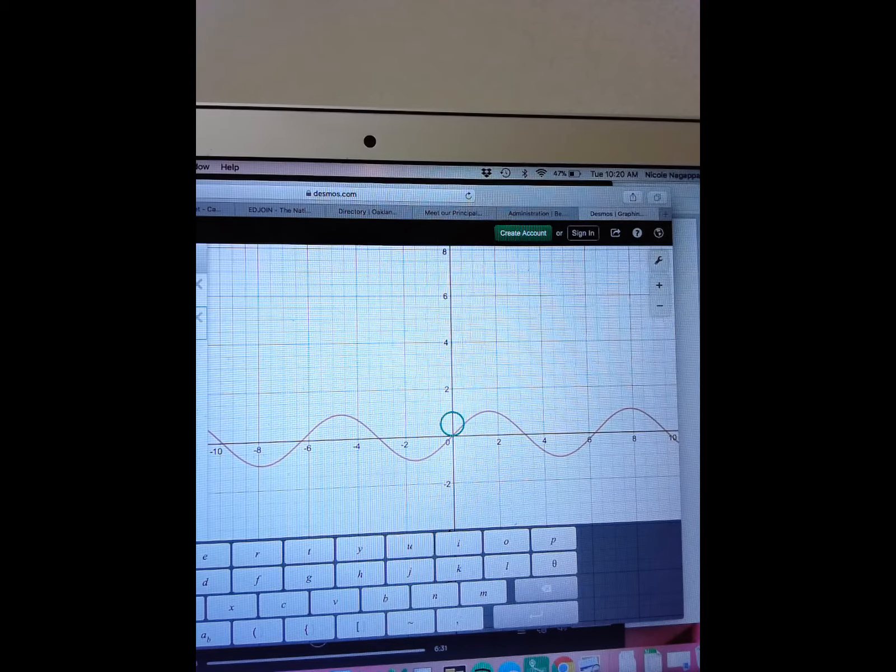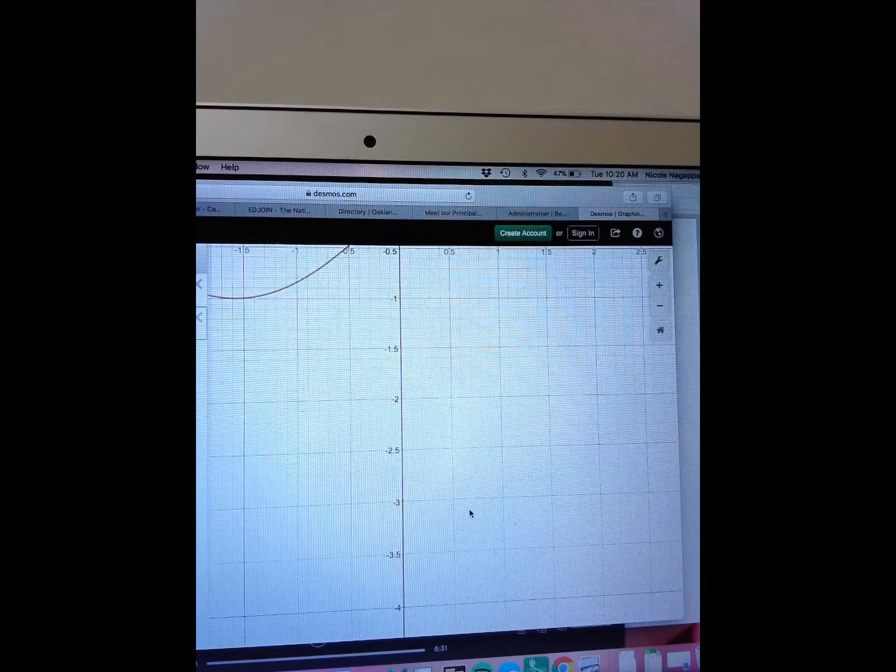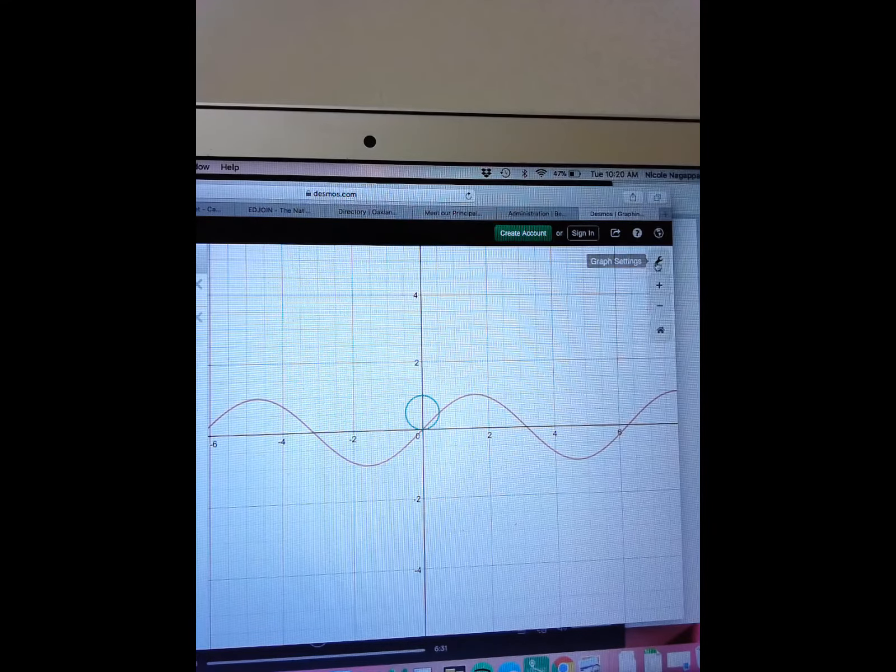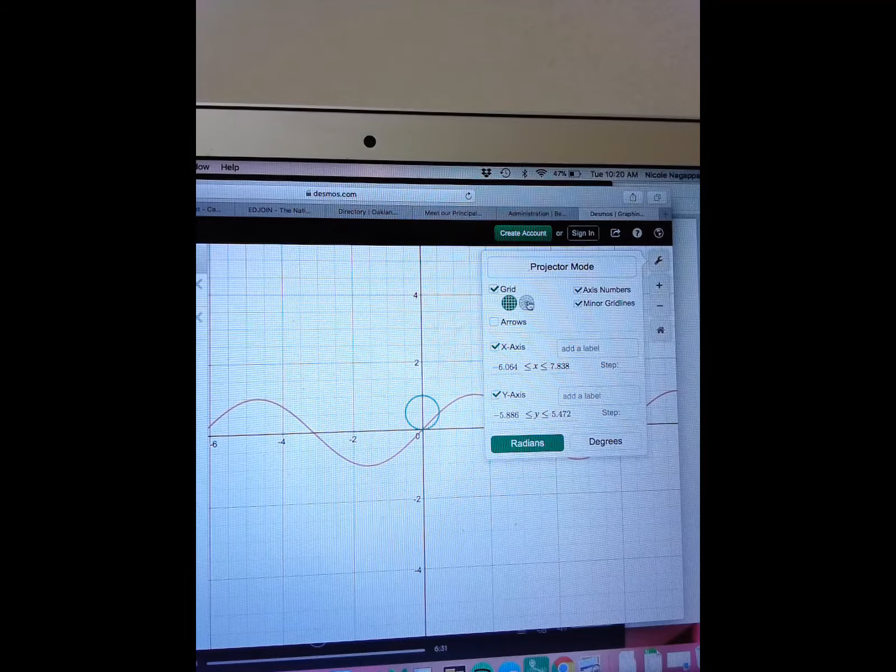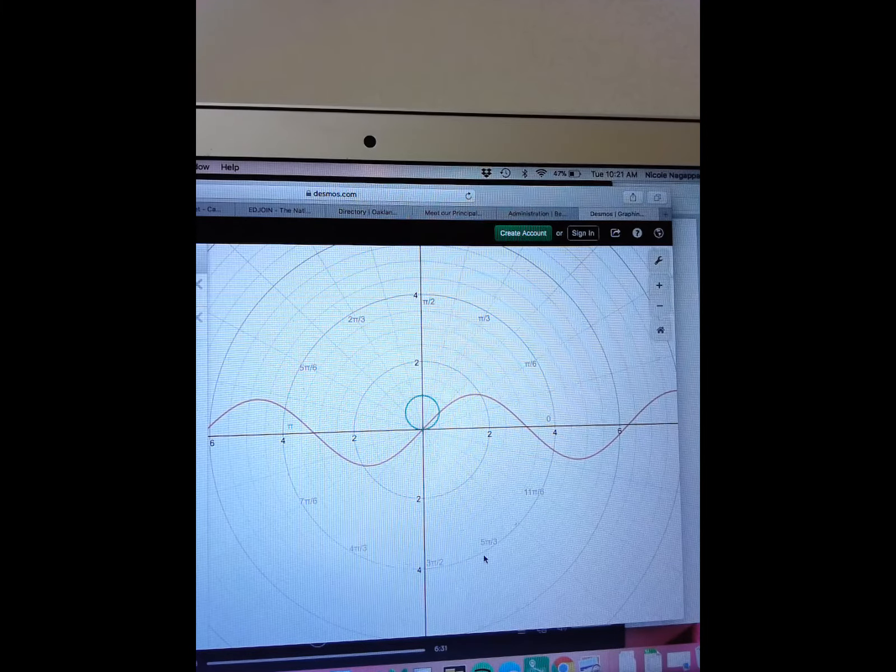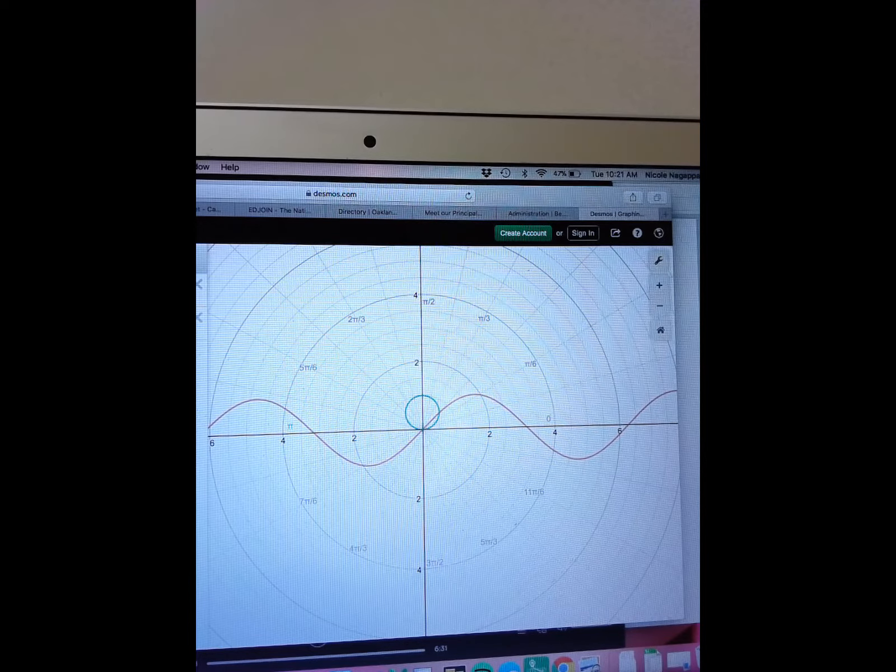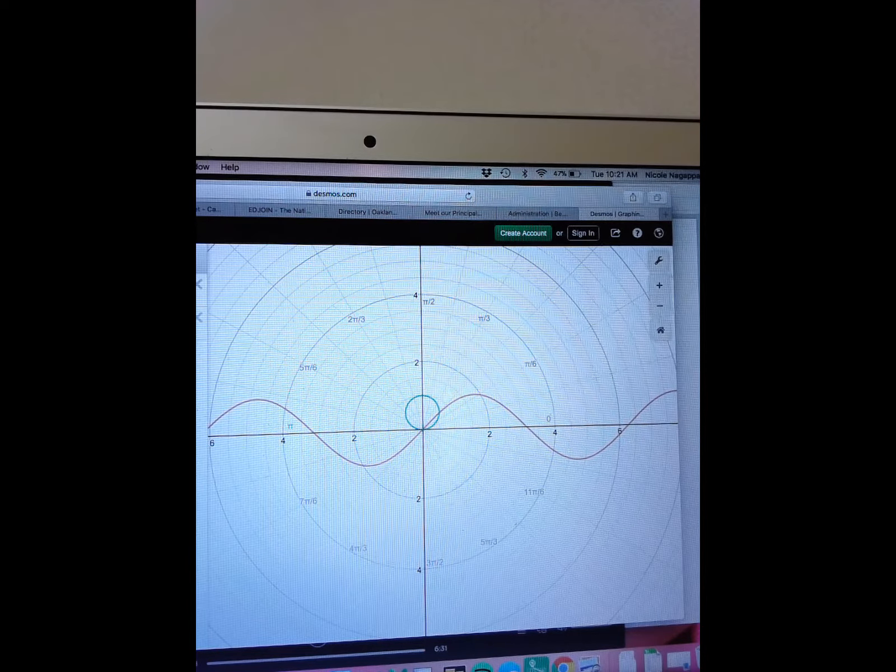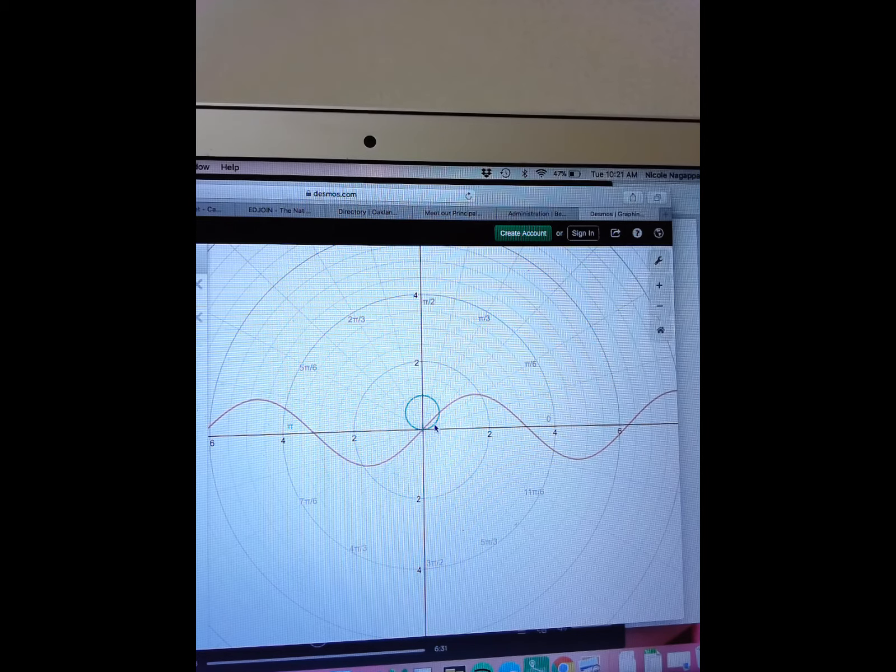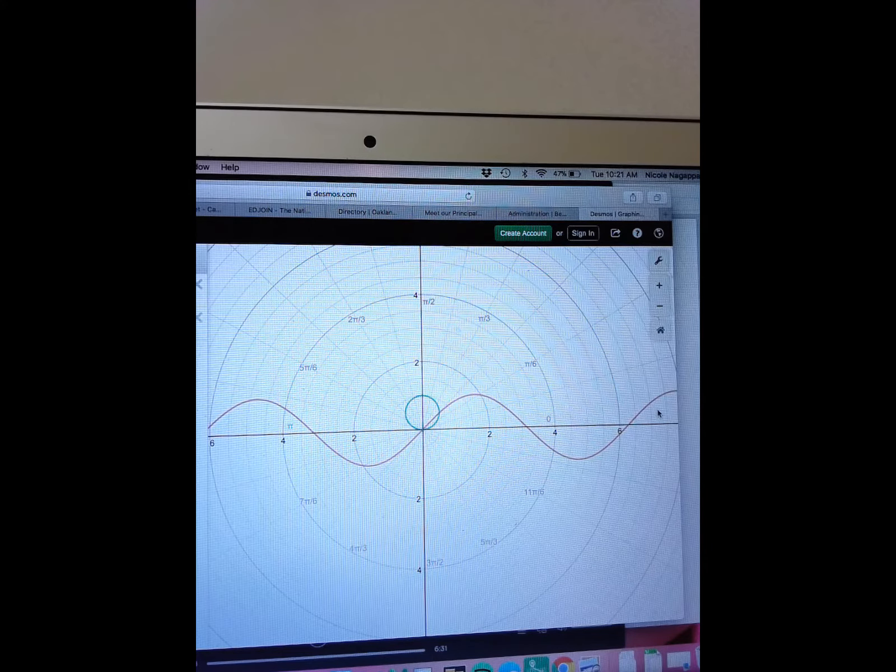It turns out that regardless of whether I'm in rectangular or polar coordinates, the graphs of these don't change. The x and y signify rectangular, and the r and theta signify polar coordinates. This is where we've got the polar version, and this is where we have the rectangular version.